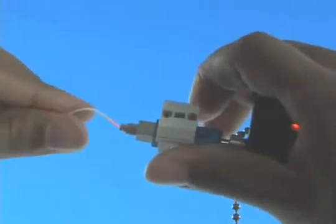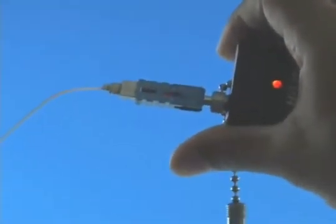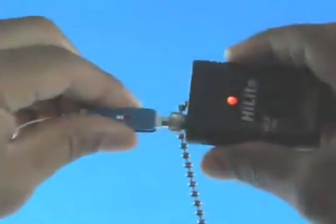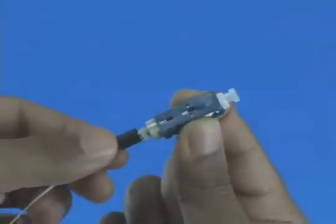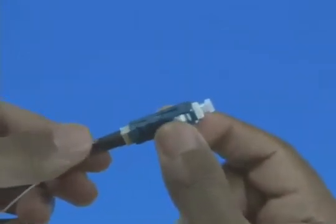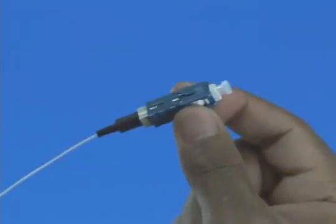Make a bend in the fiber to maintain connection. Squeeze both sides of the wedge clip to release the wedge. Discard the wedge clip. Remove the VFI from the connector. Place the dust cap back onto the connector. Slide the 900 micron boot onto the connector. Termination is now complete.